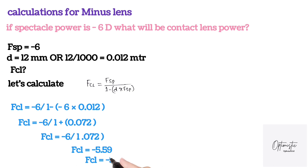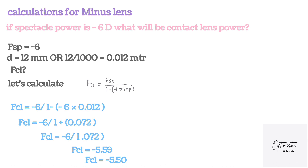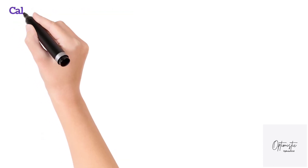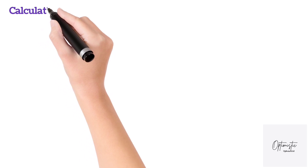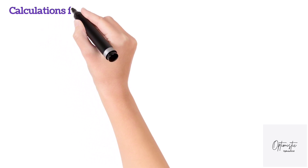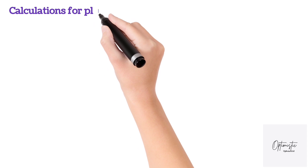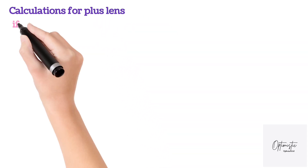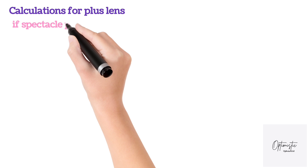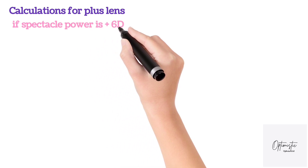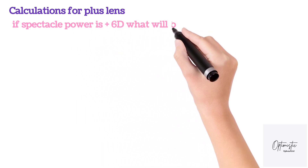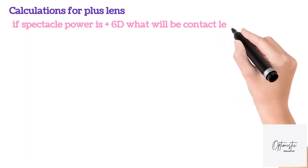Next, divide minus 6 by 1.072 and you'll get minus 5.59, so the exact power will be minus 5.50 for the contact lens. The spectacle power was minus 6 and the contact lens power is minus 5.50. As mentioned before, when the minus lens moves toward the eye, it becomes more effective — that's why we require less minus power for the contact lens than the spectacle.